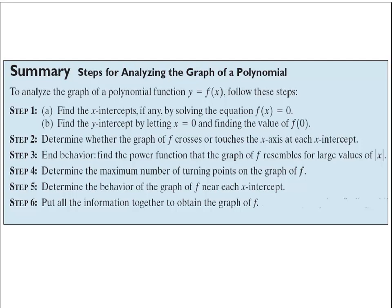In summary, the labeled graph shows the parabolic end behavior, the three x-intercepts, and the local approximations — a line, a parabola, and a line — at each intercept. Filling in the gaps with a smooth continuous curve gives the full polynomial graph. To analyze any polynomial: step one, find the intercepts; step two, determine crossing or touching; step three, find end behavior; step four, determine turning points; step five, determine behavior near intercepts; step six, sketch the graph. Then use technology to check your work.